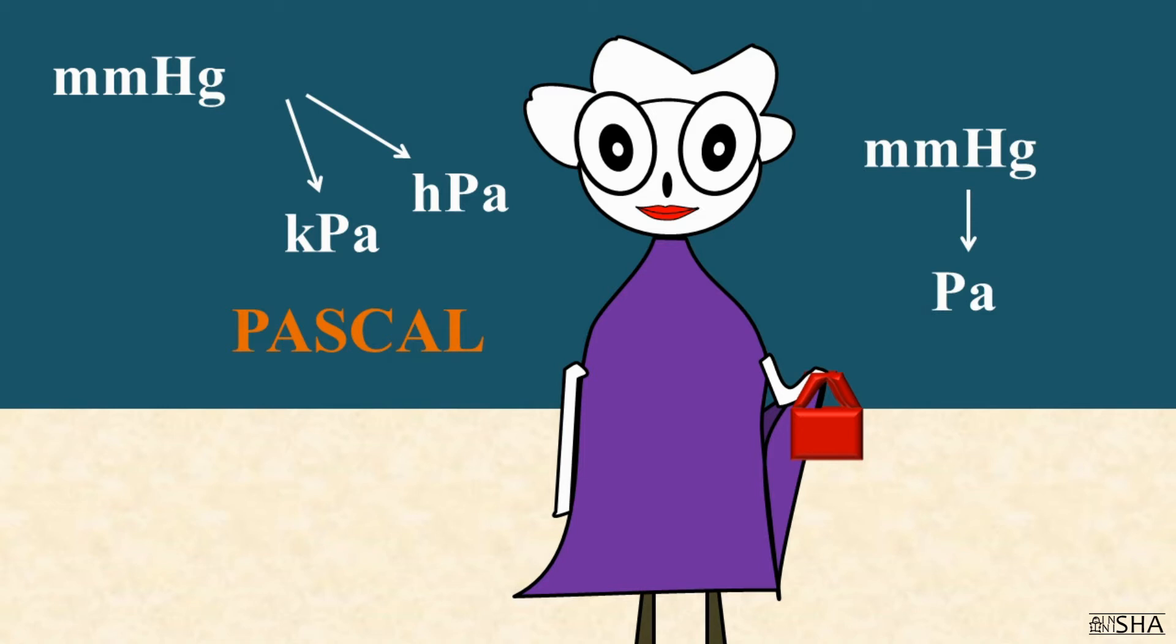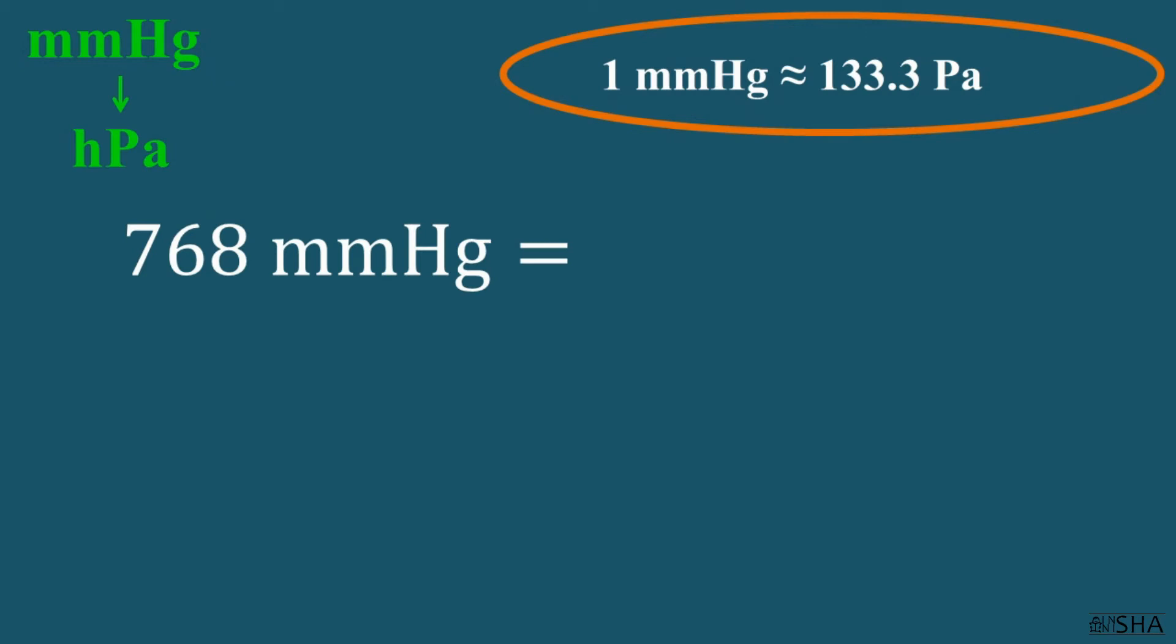It's better to convert millimeters of mercury to hecto- or kilopascals in two steps. Firstly, convert into pascals and then into the desired unit of measurement according to several very easy rules, which you will learn from the third episode. Let's try to convert millimeters of mercury, firstly into hecto-pascals, and then into kilopascals.